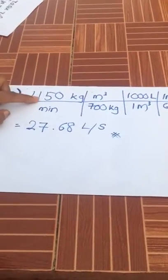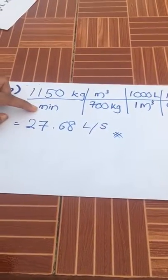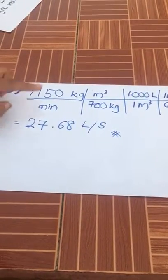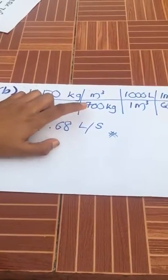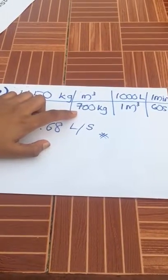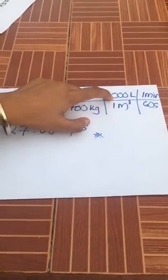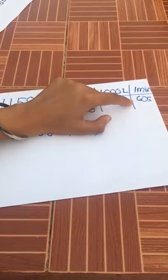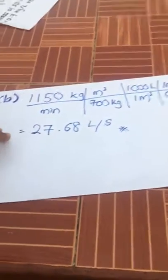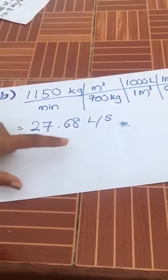So it is given 1150 kg per minute. Then you divide by 700 kg, which is the specific gravity, and then times by 1000 liters. And one minute consists of 60 seconds, therefore you will get an answer of 36.68 liters per second.